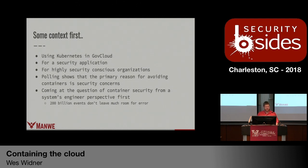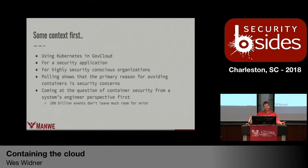That's the genesis for this talk: we wanted to know what it would look like if our environment got compromised. We're using Kubernetes in Amazon's GovCloud region for a security application for customers, and they really want to know what an attack profile would look like. We do about 200 billion events per day — about 16 terabytes every six hours — so performance and security both have to be considered at the same time at really high volume.